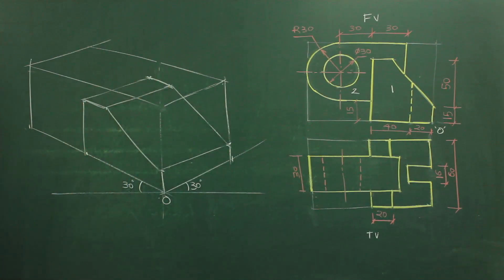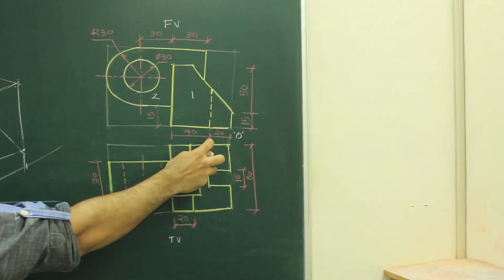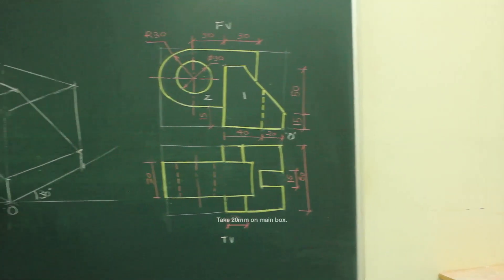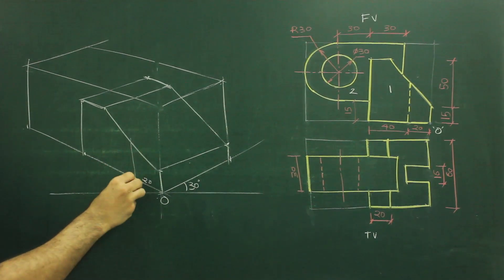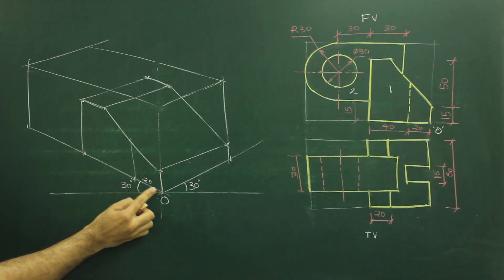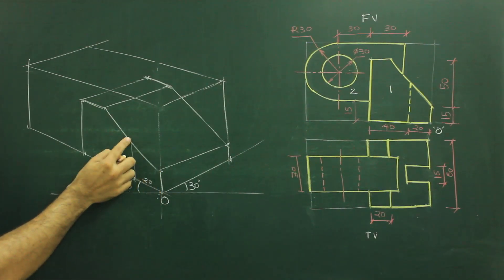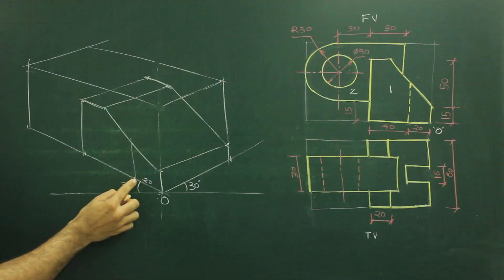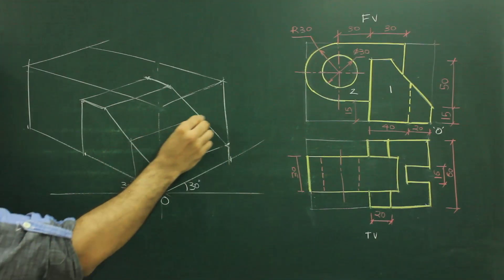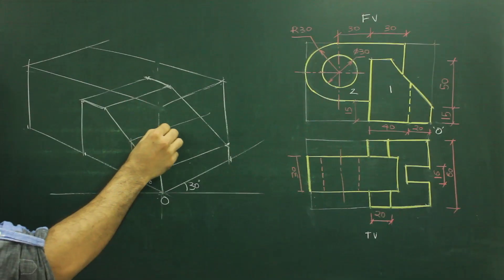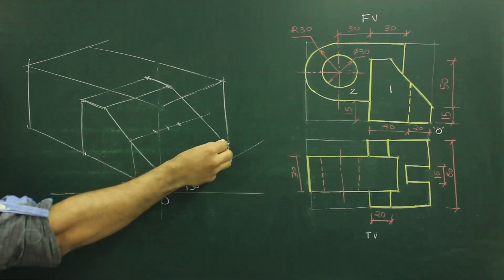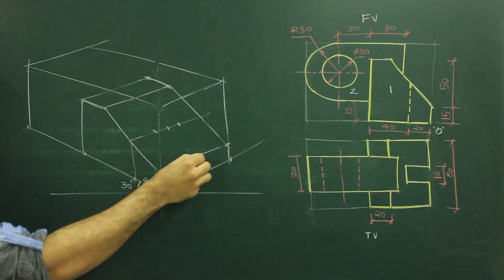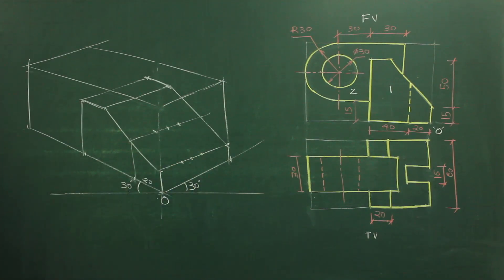In Part 1 there is a slot of 20. We need to take 20 on this line and go up. Remember: take 20 on this line, not on the other. Go up, draw a line, then find the midpoint and take 8 on both sides — because it is 16. Same way on this line also, take the midpoint, take 8 on both sides, and join.